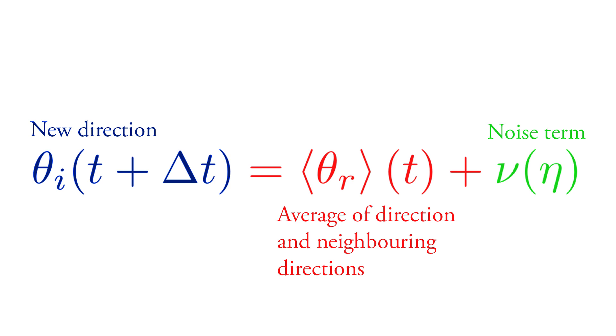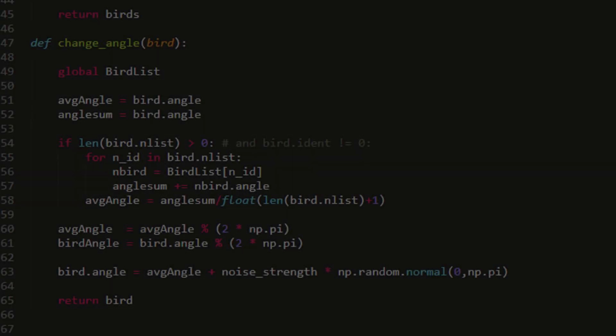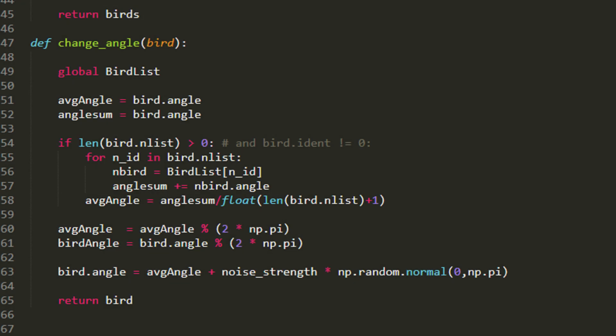This term samples random values from a normal distribution. We scale these random values with a parameter eta, allowing us to control the amount of noise present in the model. In each time step, this equation is calculated for all of the birds in the model.